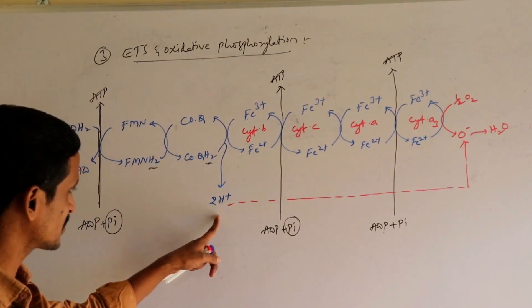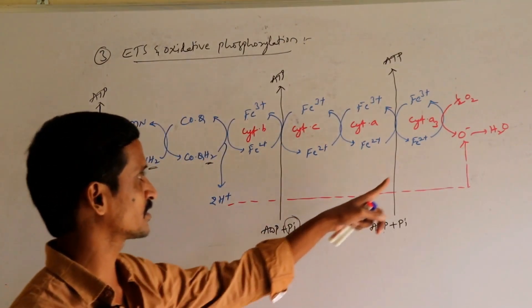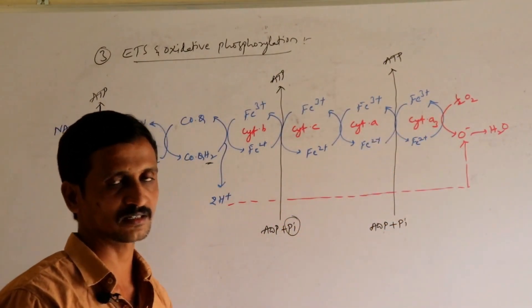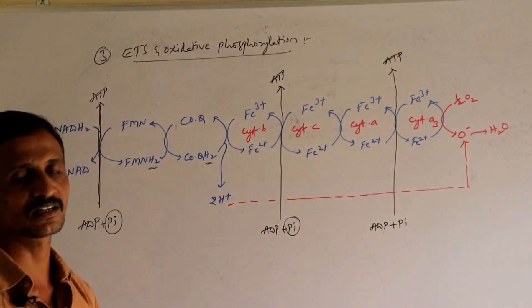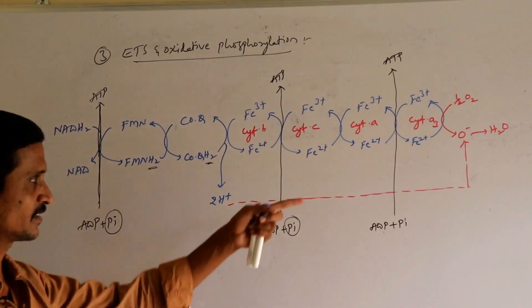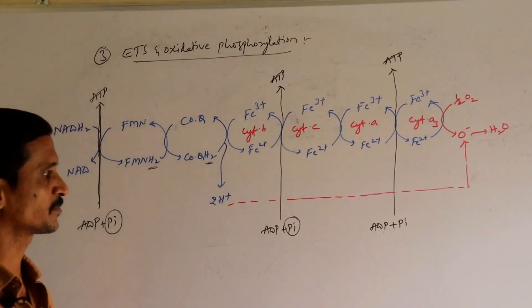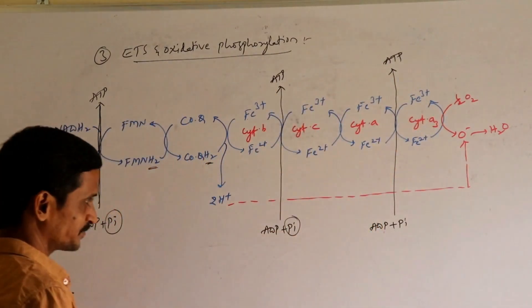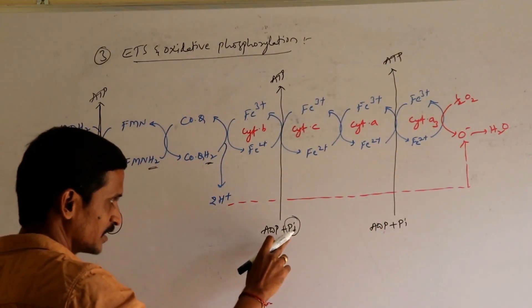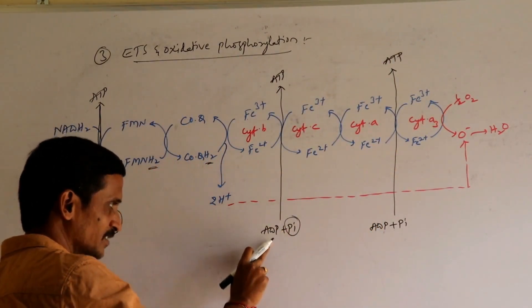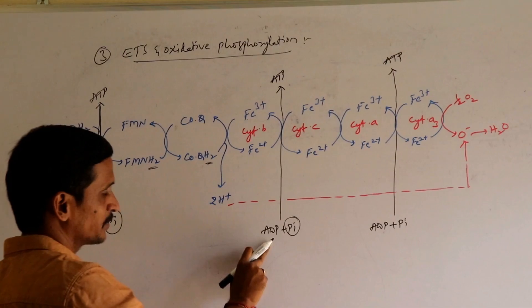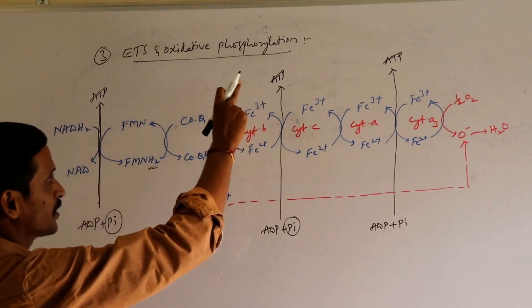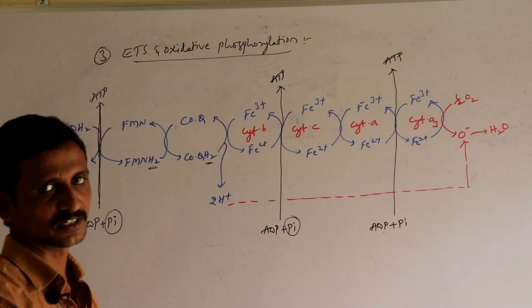Oxygen is involved in the last step, which is why this particular process is called terminal oxidation. In the presence of oxygen, inorganic phosphate is added to ADP — that is why it is called oxidative phosphorylation.